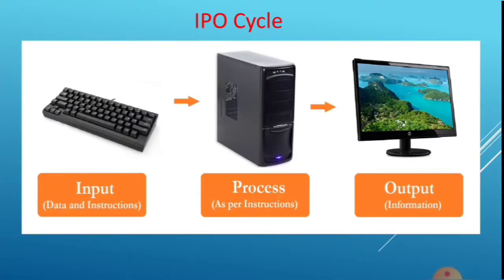Today we are learning the IPO cycle: I for Input, P for Process, and O for Output. First, we give input — data and instructions — using the keyboard. Then the CPU processes that data and instruction, and after processing, the CPU generates a result. That result is called output, and we can see it on the monitor screen.